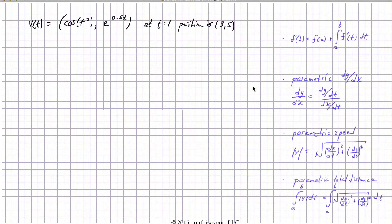This is a fairly typical standard parametric calculus problem. We're given the velocity as a function of time, both the X and Y components, and we're given a particular position at t equals 1. The questions that we're answering have to do with a particular component and the fundamental theorem, an understanding of the parametric version of dy/dx, the parametric definition of speed, and the parametric definition of total distance traveled. So let's just jump in.